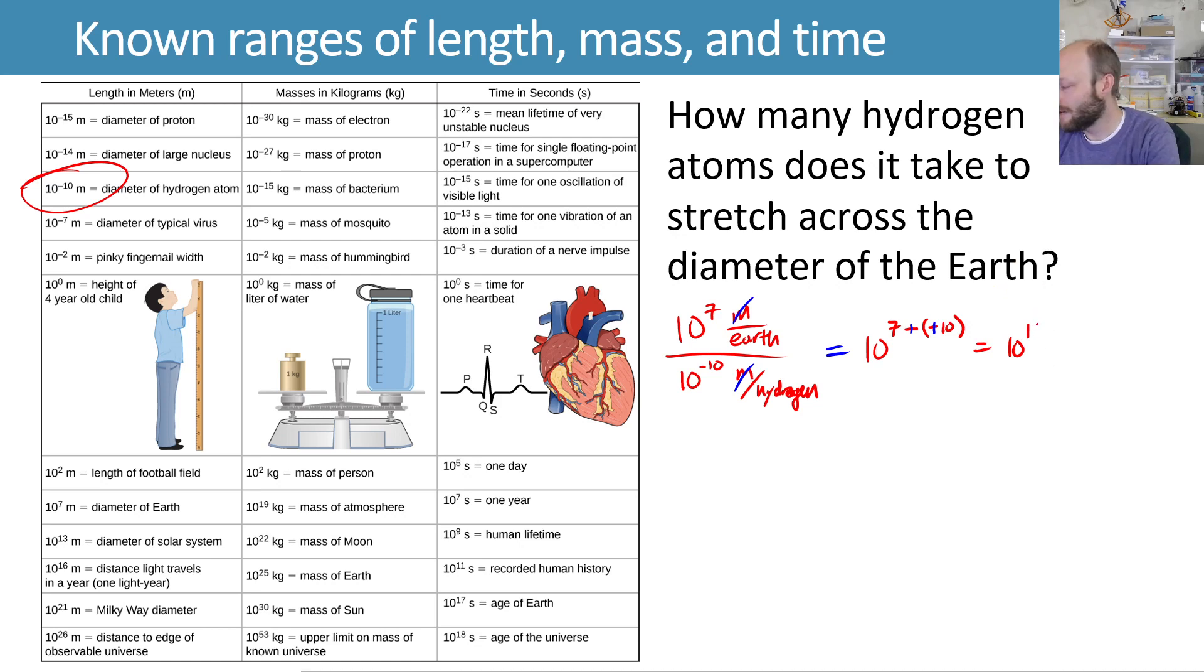So it's not exactly 10 to the 17th, right? But it's on that order of magnitude is what we'd expect. And that would be the number of hydrogens that it would take to span one Earth diameter.